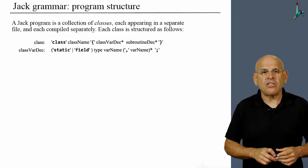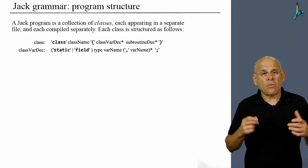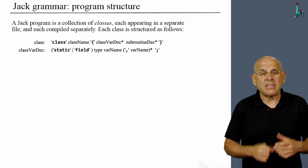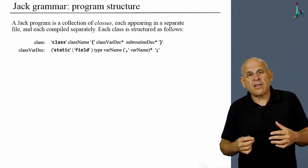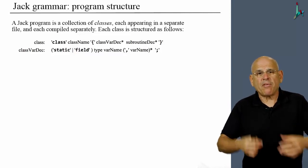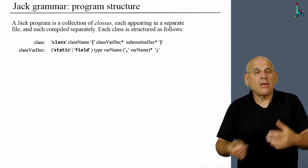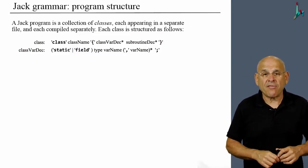Now, drilling into this definition, what is a class var dec? Well, it's either the keyword static or the keyword field followed by a type, followed by a variable name, which as you will see later on is an identifier also.